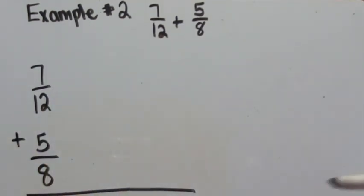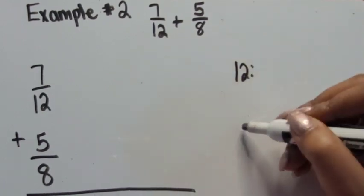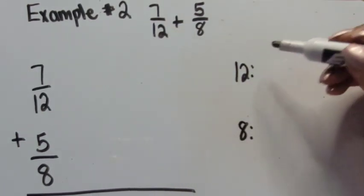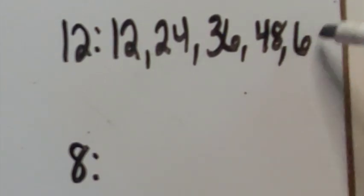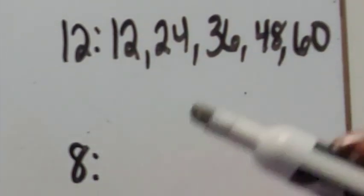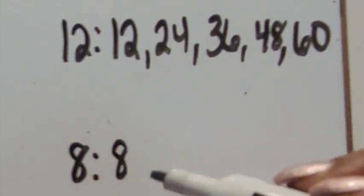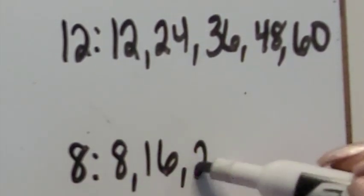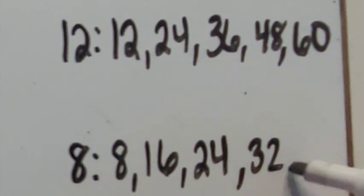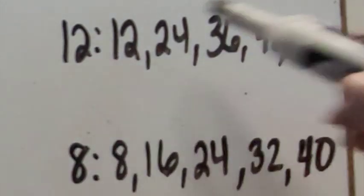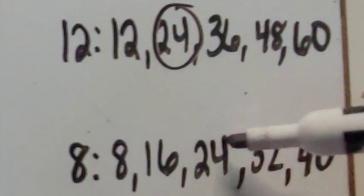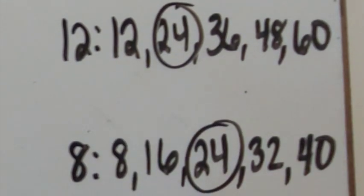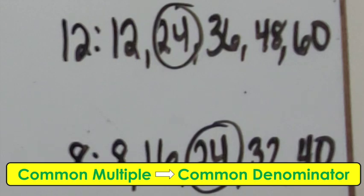We're going to list out the multiples of 12 and eight to see what they have in common. Multiples of 12: 12, 24, 36, 48, 60. Multiples of eight: eight, 16, 24, 32, 40. We listed five multiples for each, and we can see that they both have 24 as a common multiple. So we're going to use 24 as our common denominator.